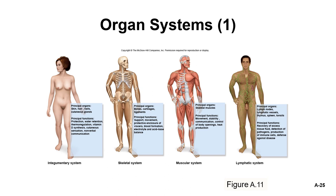Starting with the integumentary system: main organs are skin, hair, and nails; main functions are protection, sensation, and vitamin D production. Skeletal system: main organs are bones and joints; functions include protection, support, movement, blood cell production, and mineral storage. Muscular system: main organs are skeletal, cardiac, and smooth muscles; functions include movement, posture maintenance, and heat production. Lymphatic system: main organs are lymphatic vessels, spleen, thymus, and lymph nodes; functions include returning fluid leaked from blood vessels, immunity, and protection.